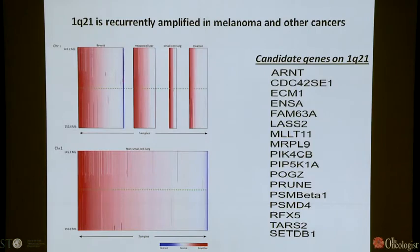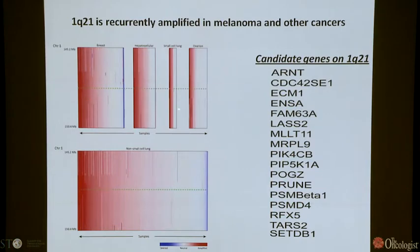It turns out that 1q21 is amplified not just in melanoma but in several other tumor types including breast tumors, small cell lung cancer, and non-small cell lung cancer — shown in GISTIC plots with amplifications in red and deletions in blue. When you drill down into this chromosomal interval, there were about 30 candidate genes in the region, any of which could have been driving the oncogenic changes. This was the gene list that Uriif and Craig started with as candidates.